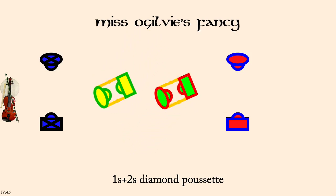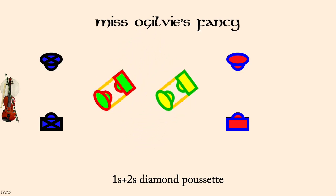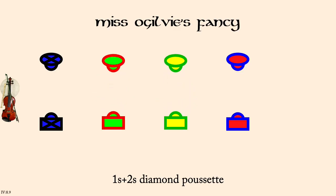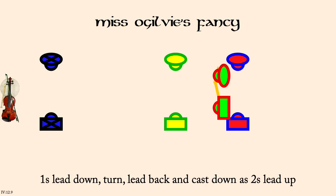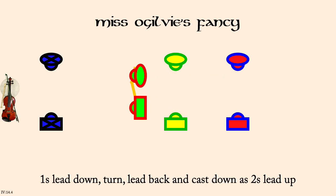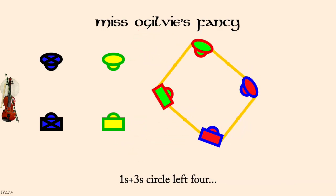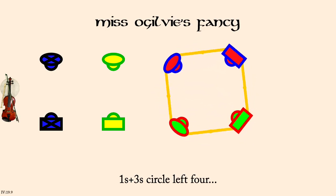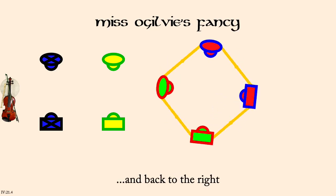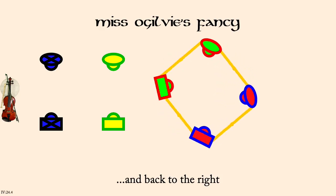Ones and twos, Diamond Pousset. Ones lead down, turn, lead back, and cast down as twos lead up. Once in threes, circle left, four. And back to the right. Twos and ones, rights and lefts.